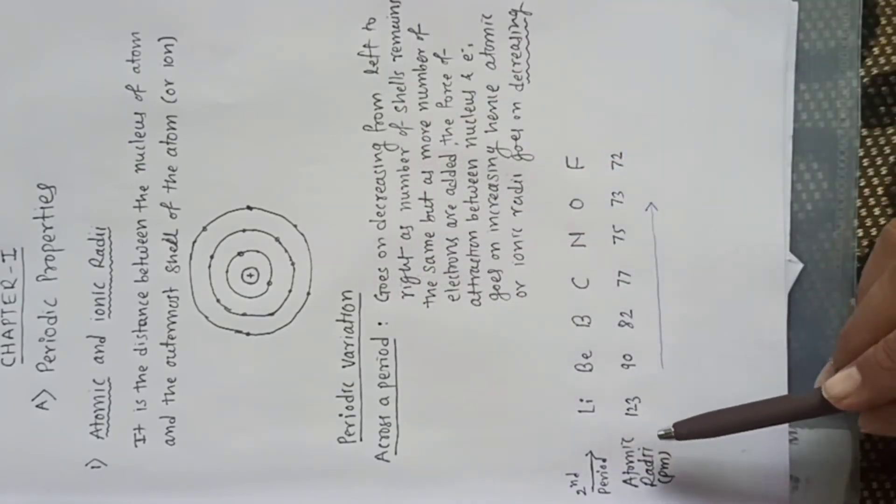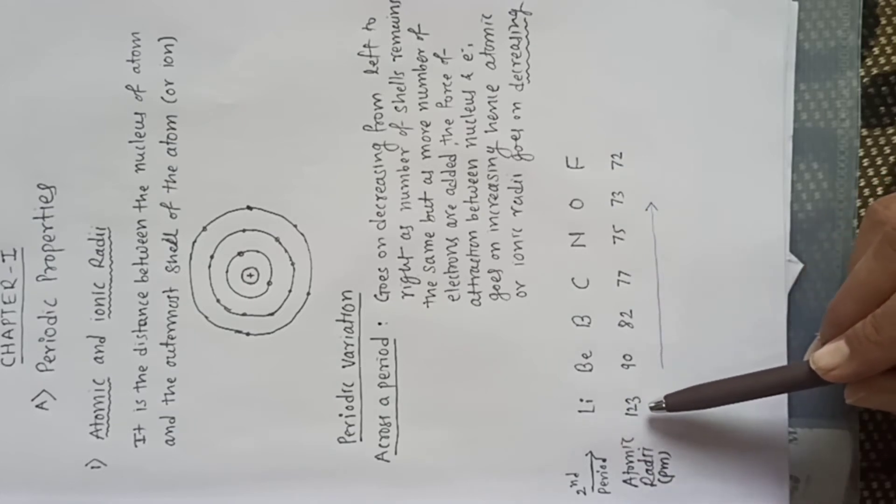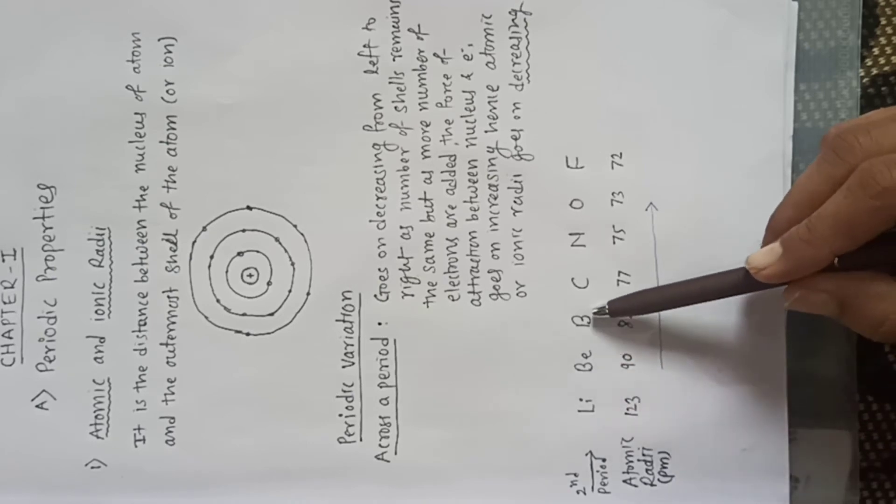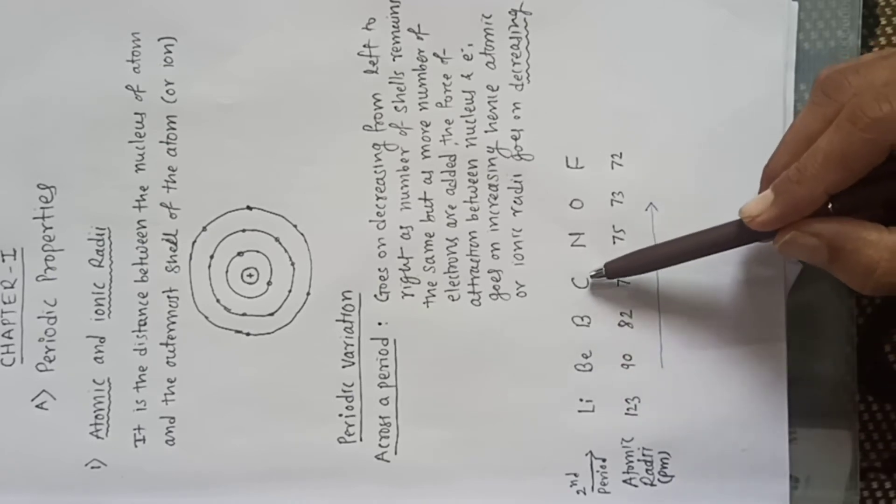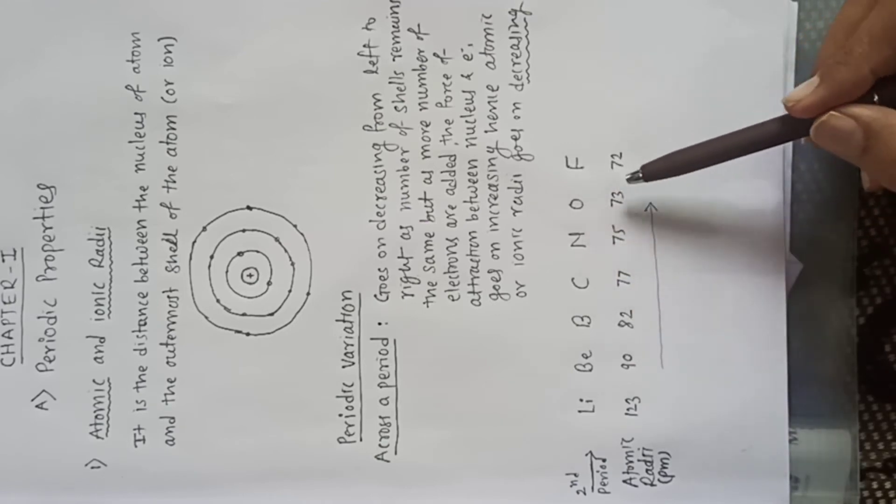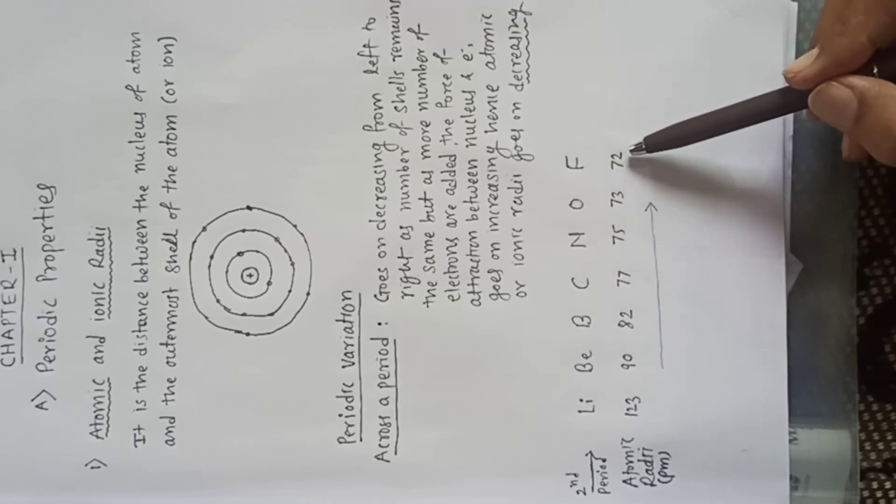See here, lithium has an atomic radius of 123 picometers, whereas beryllium has 90, boron has 82, carbon has 77, nitrogen 75, oxygen 73, and fluorine 72.